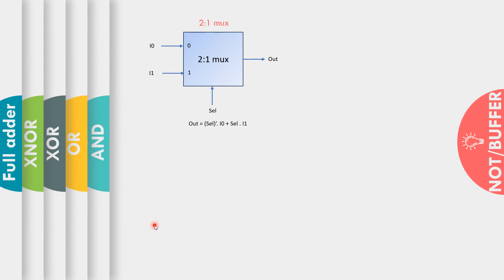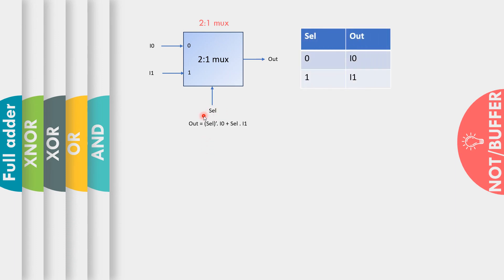First, I'll start with how we can design a NOT gate using a MUX, but before that, let me give a basic introduction to the 2-to-1 MUX. A 2-to-1 MUX has one select signal, two data input lines (I0 and I1), and one output port. Whenever the select signal is 0, the output selects the first data input line I0. When the select signal is 1, the output selects the second data input line I1.